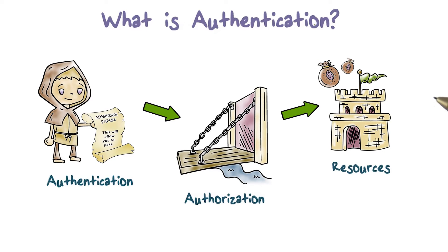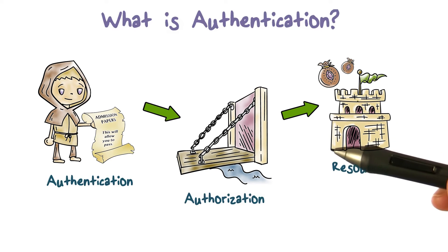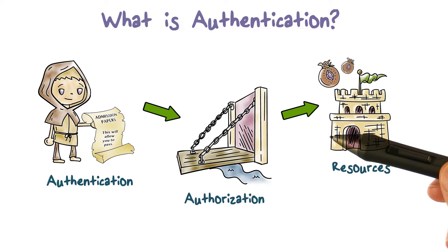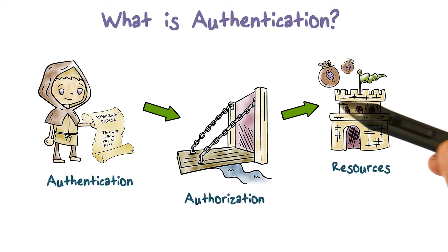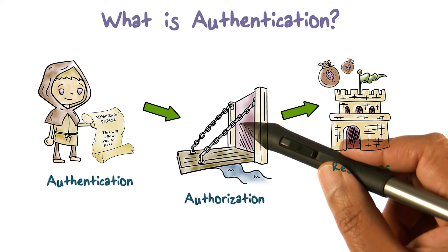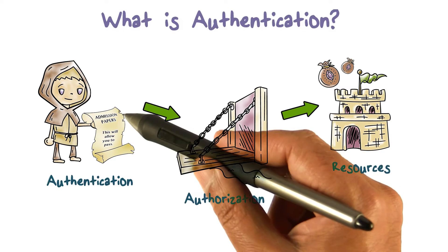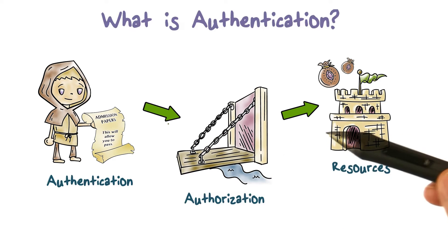We can understand the importance of authentication by going back to the discussion we had about what a trusted computing base does. We have resources that need to be protected, and we can do that by having a trusted computing base that is a reference monitor. Every request that comes for a resource has to be monitored, and the question is: should this request be able to access the resource that is the target of this request? To answer that, we really have to establish who the request is coming from — and that is where authentication comes in.